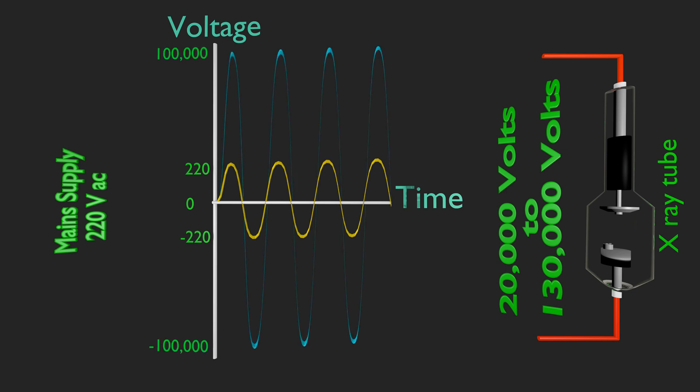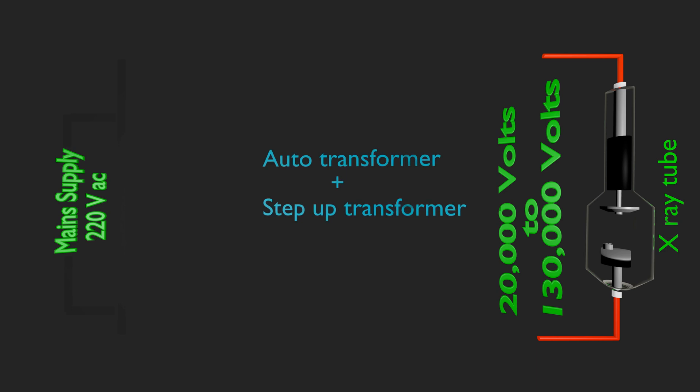We need to increase this 220 voltage AC supply to kilovoltage range. This change is usually achieved by combination of two transformers. Firstly, by using an auto transformer, and secondly by a step-up transformer.